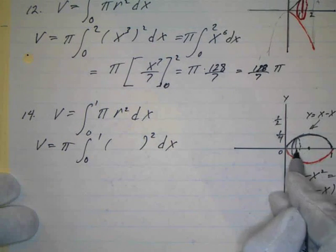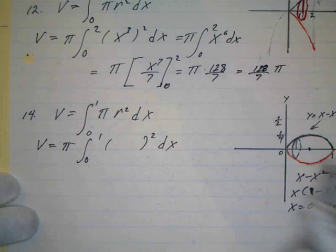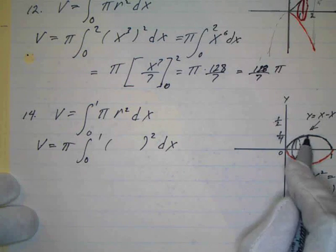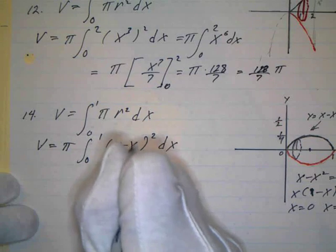And the y, which is actually the radius, is going to change depending on the value of x. Like right here, when x is a half, it's going to be one-fourth, et cetera. So we put this in. So this is my radius. x minus x squared.